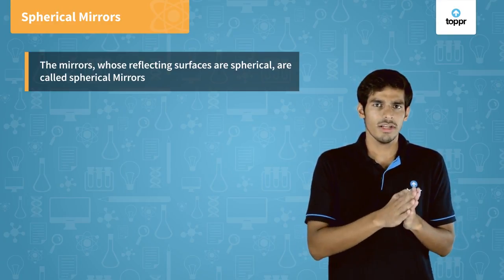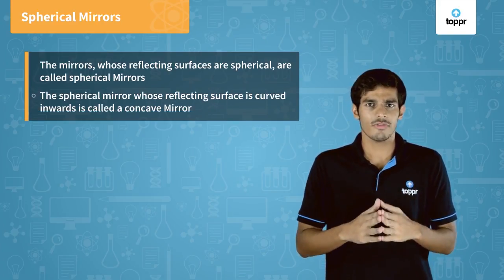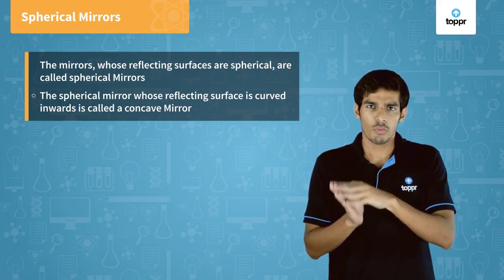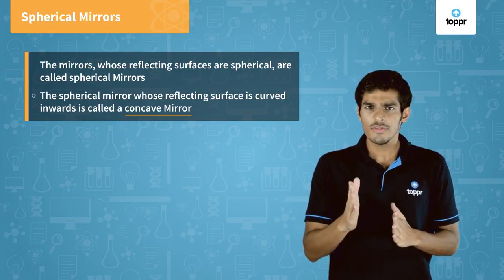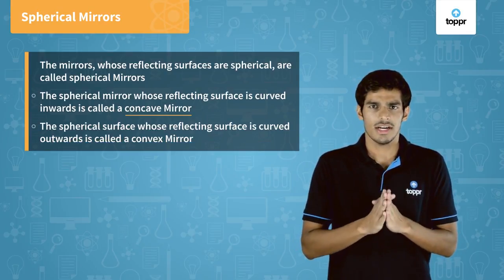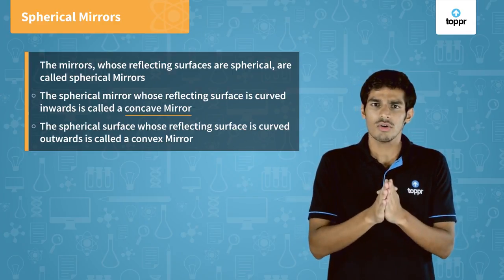The reflecting surface of the mirrors can be curved inwards or outwards. If the reflecting surface is curved inwards, that is, the reflecting surface points towards the center, it is called a concave mirror. If the reflecting surface of the mirror is curved outwards, that is, the reflecting surface points away from the center, it is called a convex mirror.